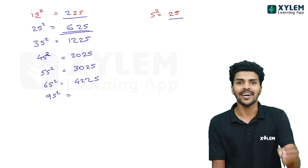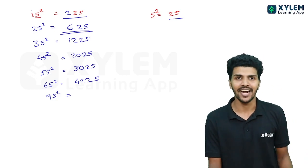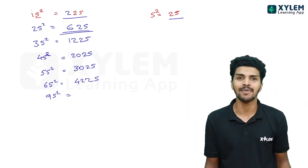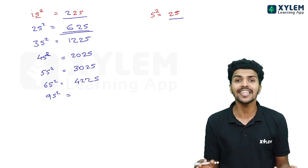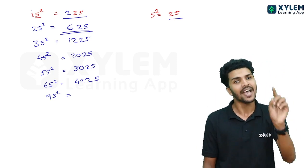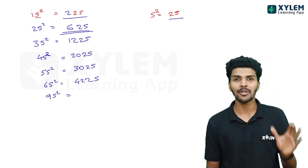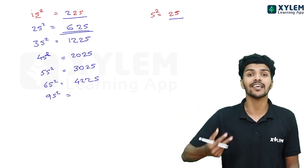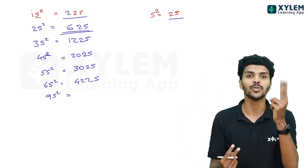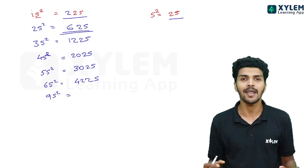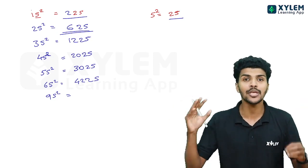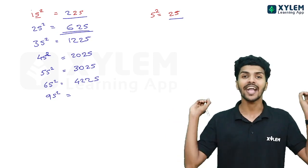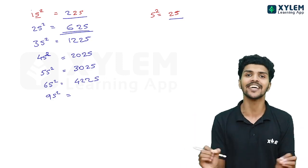So, next topic. These rules apply to numbers ending in 0 and 5. That is how you find their squares. In other cases, the numbers in the square work differently.